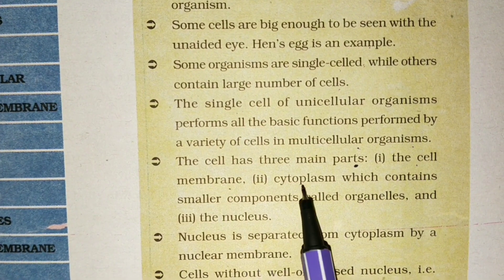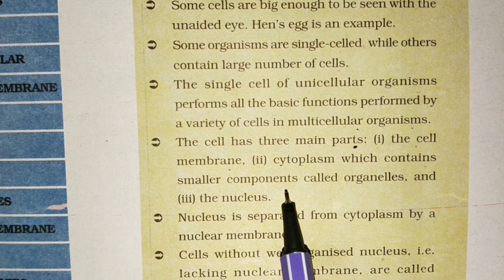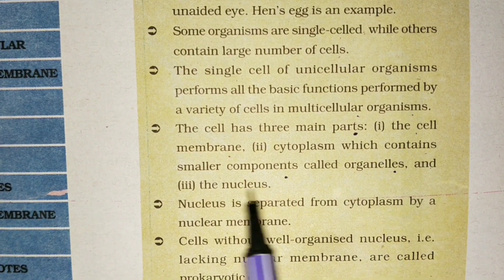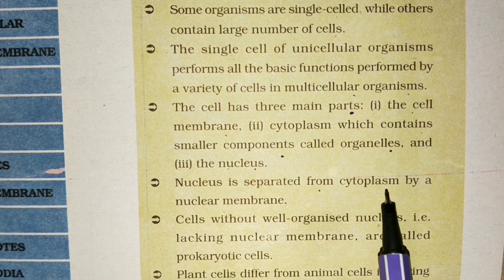membrane, second is cytoplasm which contains smaller components called organelles, and the third one is nucleus. Nucleus is separated from